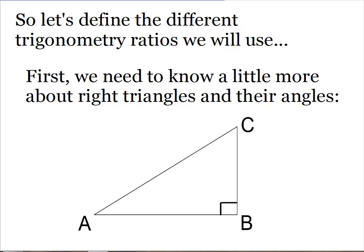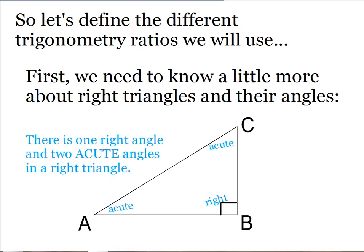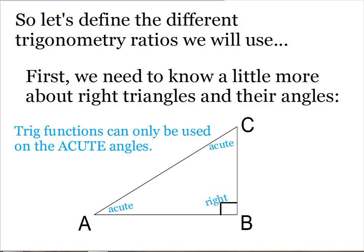So here I have a right triangle. This is triangle ABC. Note that there is one right angle and two acute angles in a right triangle. Trig functions only work on the acute angles. We will never use trig functions on the right angle itself.